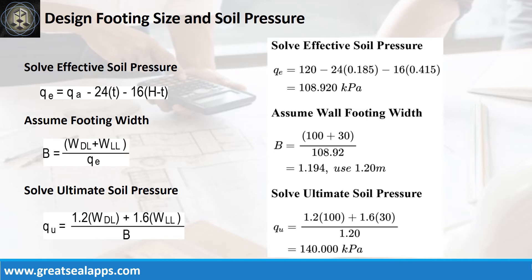The effective soil pressure is 108.92kPa. Given uniform dead load equals 100kN per meter and uniform live load equals 30kN per meter, the footing width is 1.2 meters and the ultimate soil pressure is 140kPa.